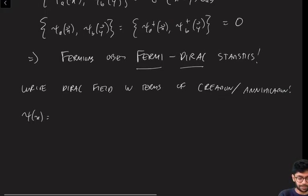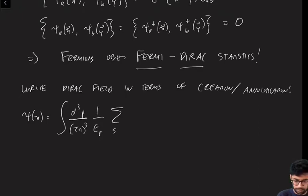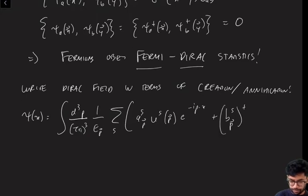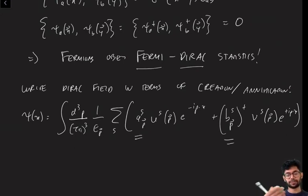So in particular, if we write the Dirac field in terms of creation and annihilation operators, in other words, if I write a formula like this, you've seen these things many times. This is just the usual decomposition of the fermion field into creation and annihilation operators. There's a few extra bells and whistles here, which I'll explain in a second.